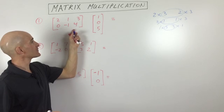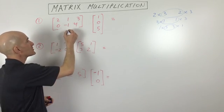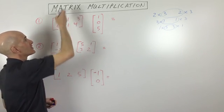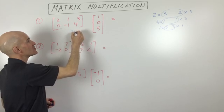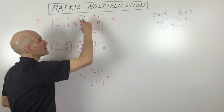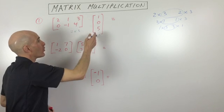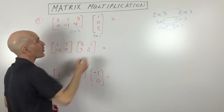So let's look at some examples. Let's look at this first one. Let's analyze the dimensions. We have two rows and three columns. So this is a two by three matrix. This one has one, two, three rows and one column. So we have a three by one matrix.